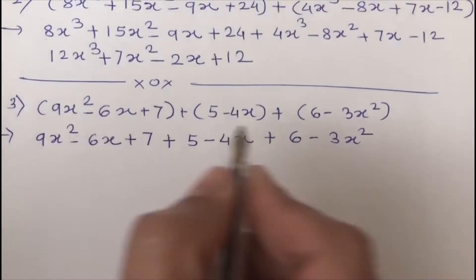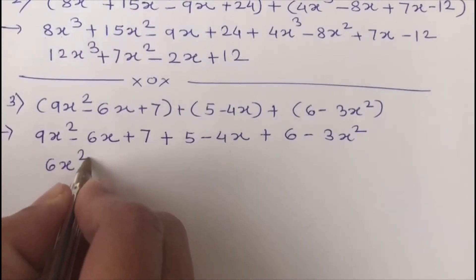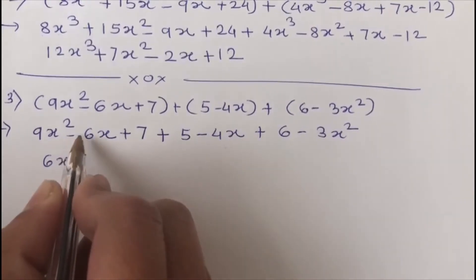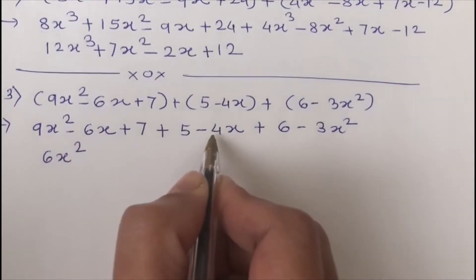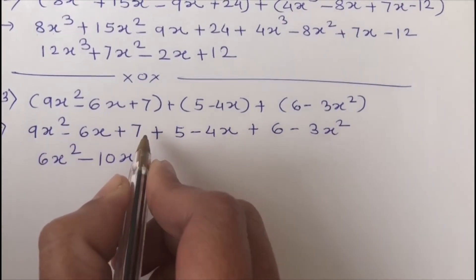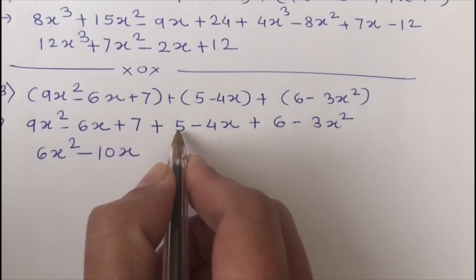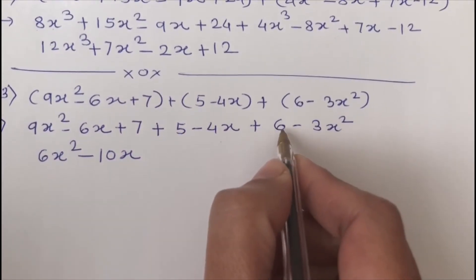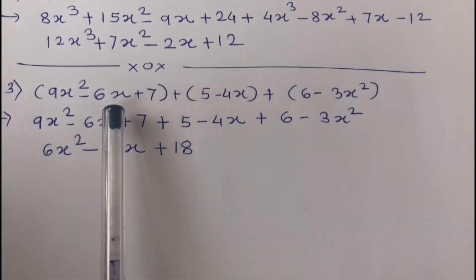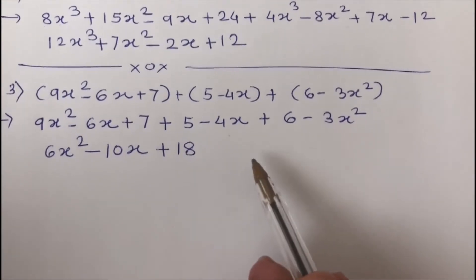Now, 9x squared minus 3x squared equals 6x squared. For the x terms, minus 6x and minus 4x gives minus 10x. For the constant terms, plus 7, plus 5, and plus 6: 7 plus 5 is 12, plus 6 is 18. So when we add these polynomials, it gives us 6x squared minus 10x plus 18.